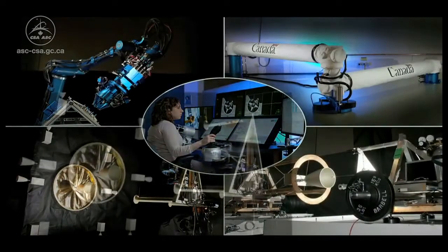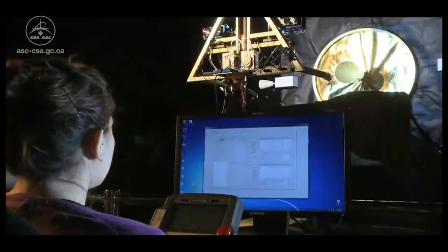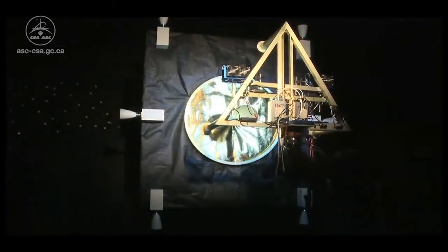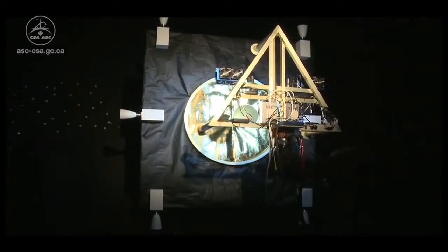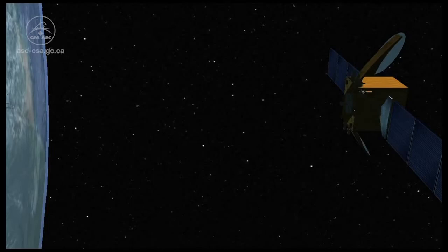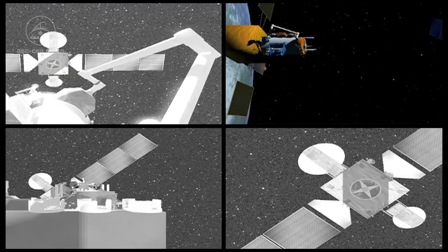The Proximity Operations Testbed, or POST, simulates the final approach and alignment of a servicing spacecraft, critical steps required for on-orbit servicing. POST will be used to investigate and understand the demands on the operator and control techniques and strategies needed during the final alignment and approach to the spacecraft for servicing.